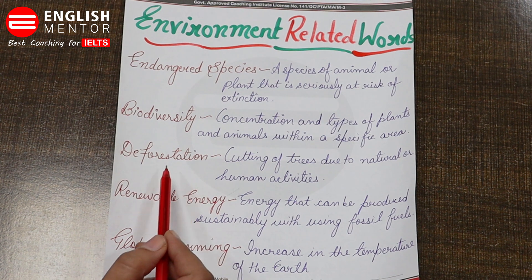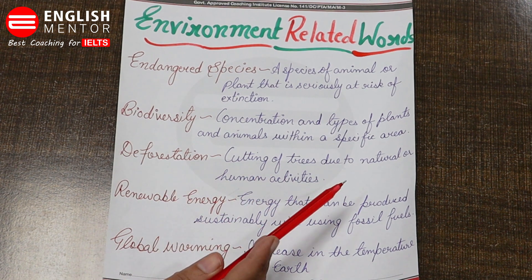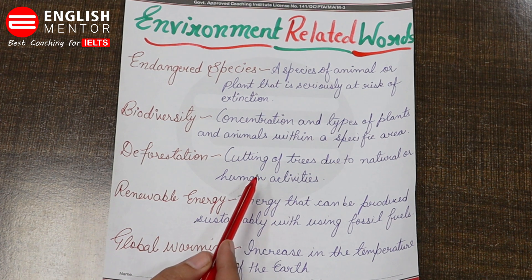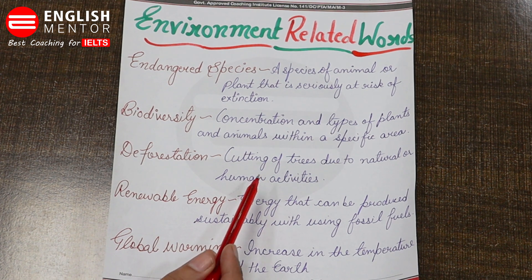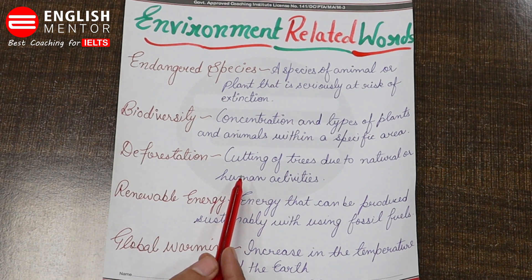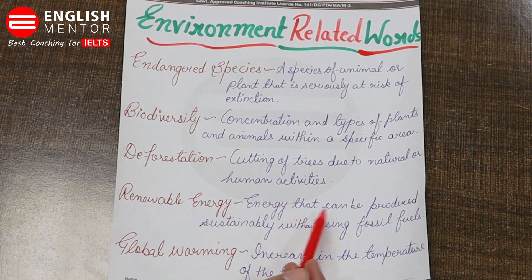The third one is 'deforestation' — cutting of trees due to natural or human activities. We know this very well. Due to human population explosion, people want to fulfill their needs, so they chop down trees or clear forest land. This is known as deforestation.